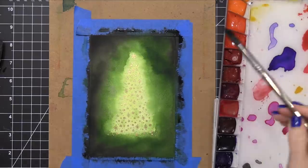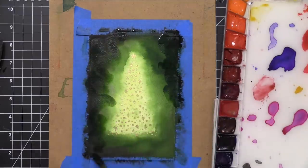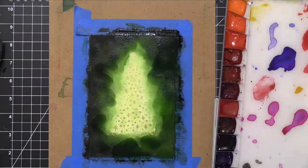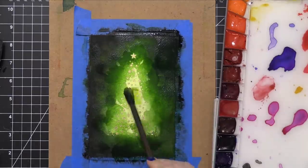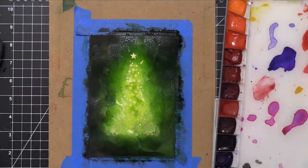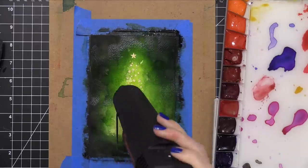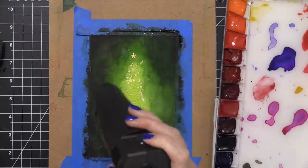So after this was dry I went back in with more color just to darken up those edges again. I wanted to make sure that it was nice and dramatic. Brought that green back in and I eventually added some more of that limey green shade right back in the center.